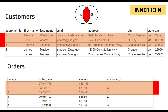The first join we cover in this session is inner join. Inner join means we join two tables and only the matching rows are returned. For reference, we are going to use two tables for all of the joins discussed in this course: the customers table and the orders table.